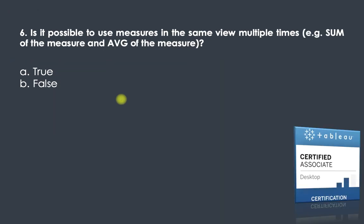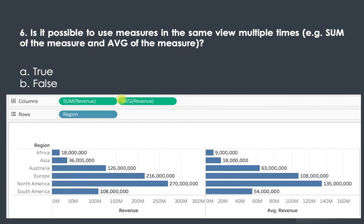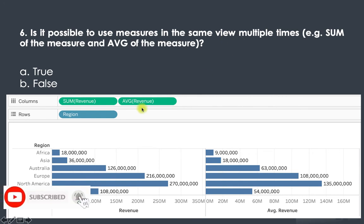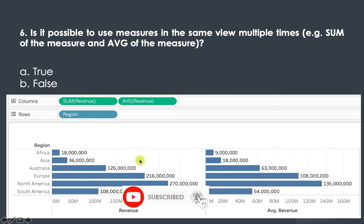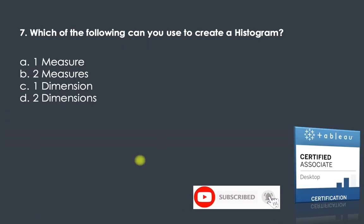The sixth question: is it possible to use measures in the same view multiple times? For example, SUM of a measure and AVERAGE of the same measure. In Tableau, you can use the same Revenue field twice — once as SUM of Revenue and once as AVERAGE of Revenue. So yes, we can use the same measure in the same view multiple times.